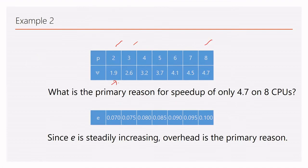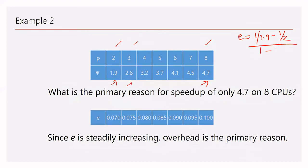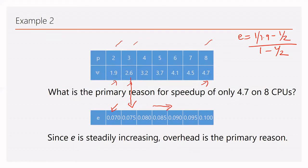In another example, a program achieves speedups of 1.9, 2.6, and up to 4.7. Computing E for P=2: (1/1.9 − 1/2)/(1 − 1/2) = 0.07, and for the next combination it gives 0.075. There is a gradual increase in E of about 0.005 as the number of processors increases, meaning the overhead is steadily increasing, which explains why speedup is limited to 4.7 on 8 CPUs.